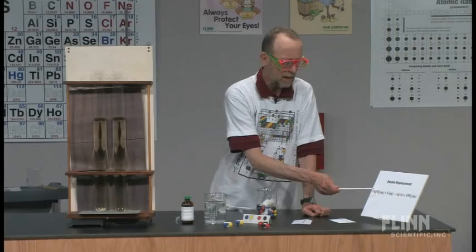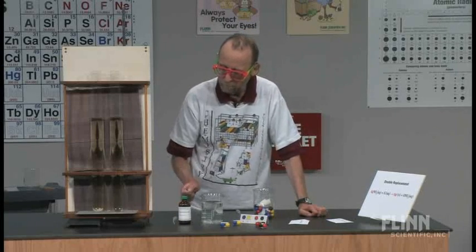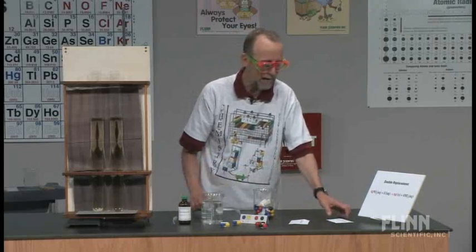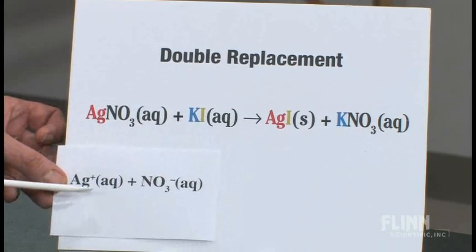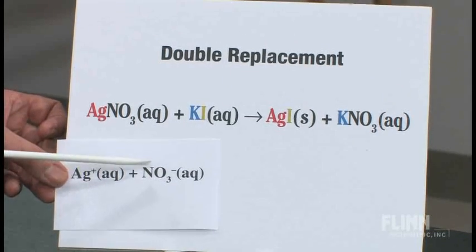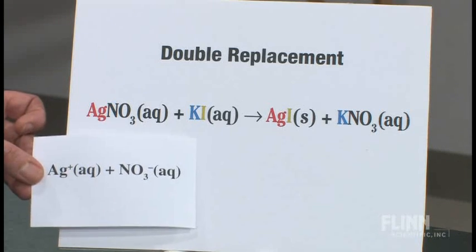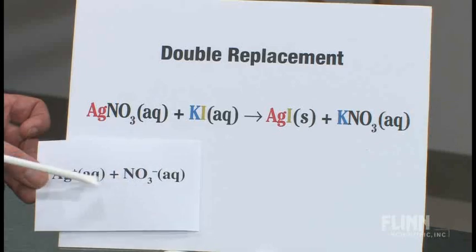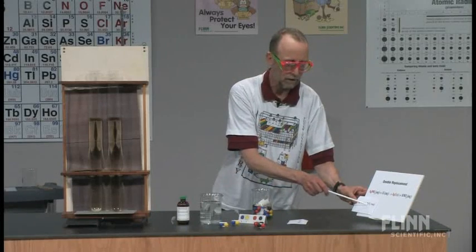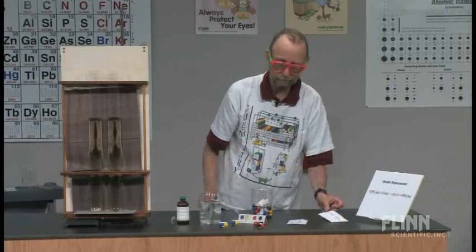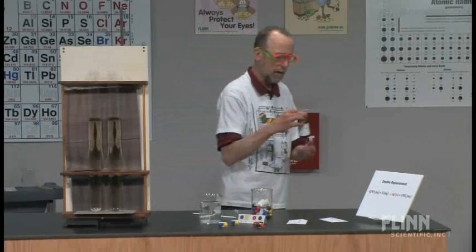So you have an aqueous solution in this bottle. Keep in mind both of these, there's mainly water in both of these. These ions are dissolved in solution. The silver nitrate aqueous means you have silver ions and nitrate ions separate. It's an aqueous solution, an ionic solution. Alright, so I've blathered on enough about this, so let's actually do the reaction.